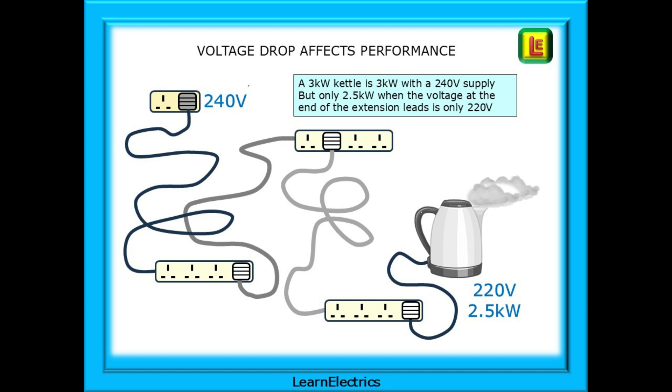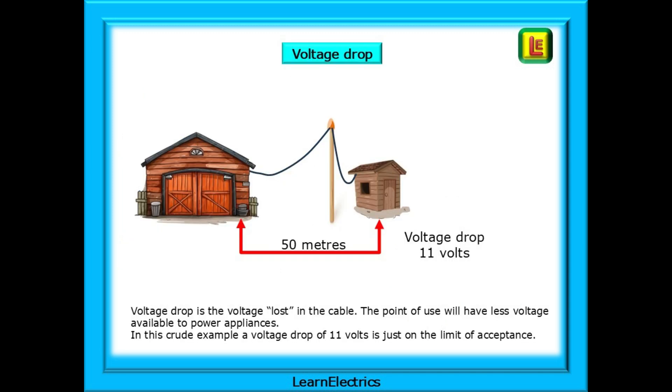In our example, if it took two minutes to boil a full kettle of water at 240 volts, it could take almost two and a half minutes to boil the same volume of water at the end of the extension leads. Many people will not realise that voltage drop is the voltage lost in the cable. The points of use will have less voltage available to power appliances, and they will happily do a DIY job and loop a long cable to the shed at the bottom of the garden. The longer the cable, the greater the voltage drop. In this crude example, perhaps a 50 metre elongation, the voltage drop of, say, 11 volts, is just on the limit of acceptance.